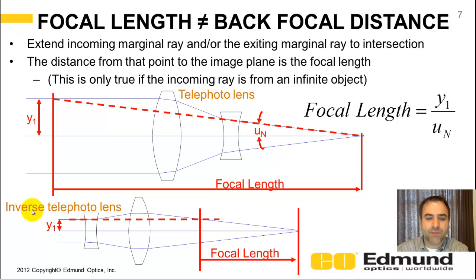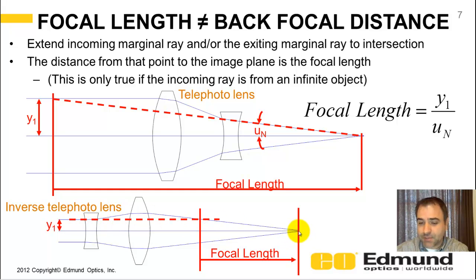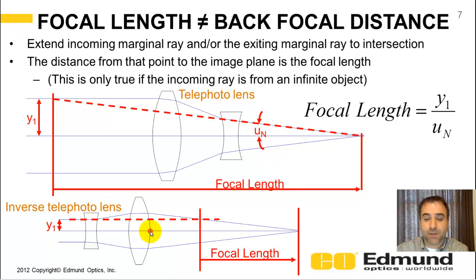Let's look at an inverse telephoto. In an inverse telephoto, the focal length is much shorter than the length of the entire lens. In this case, you project the entrance marginal ray forward until it intercepts the aft marginal ray. The focal length is even shorter than the back focal distance, which is the distance from the last lens surface to the image plane.